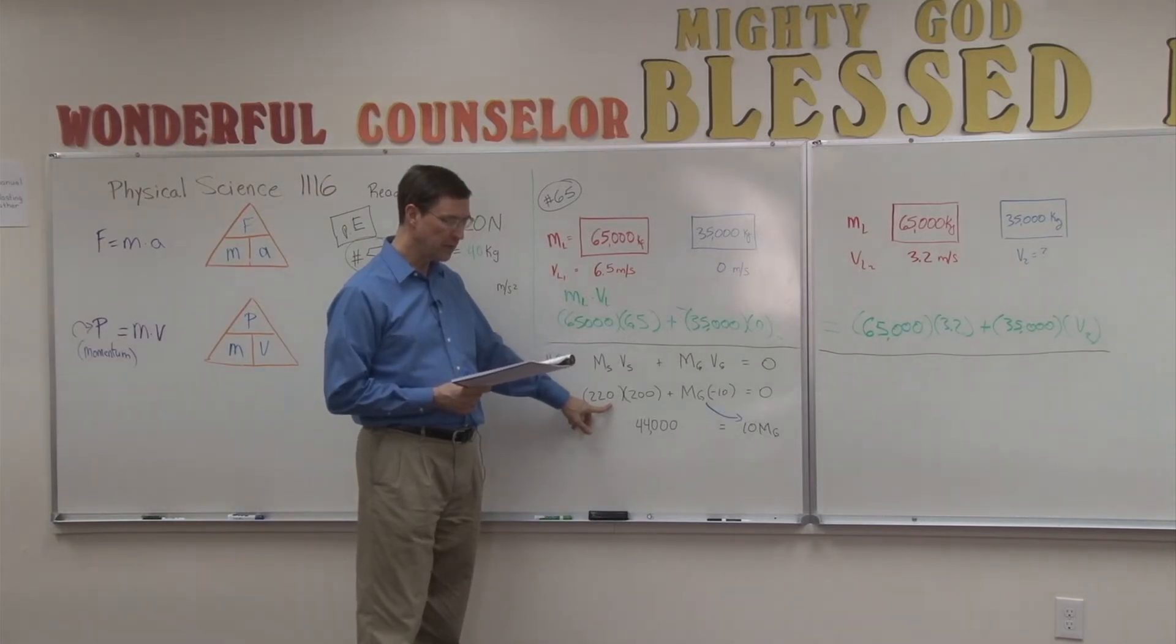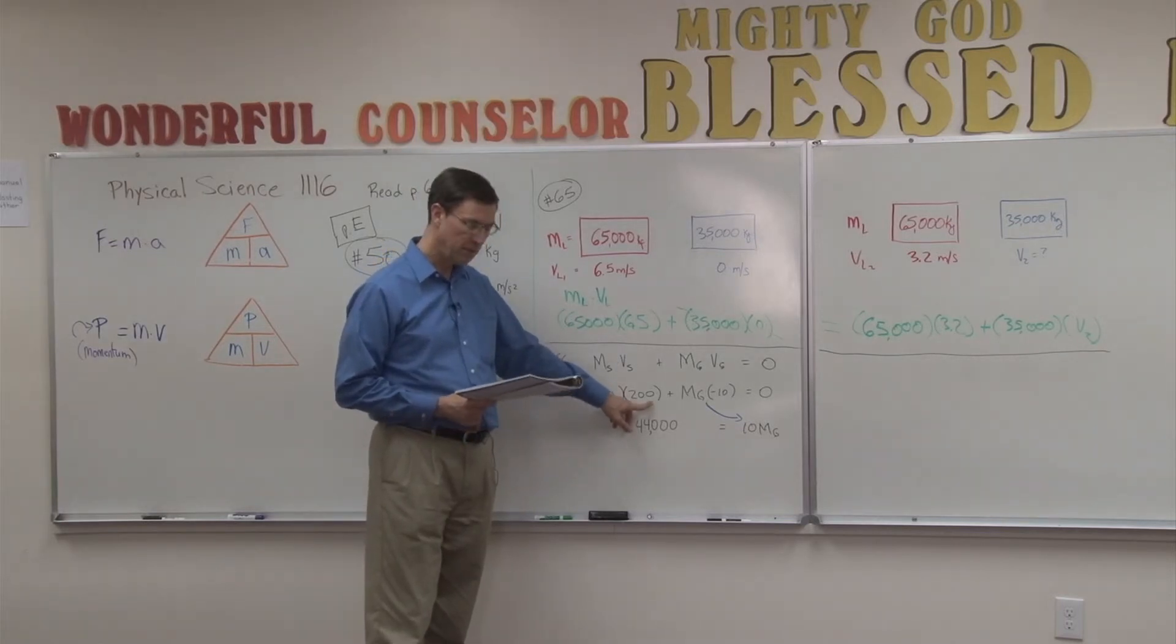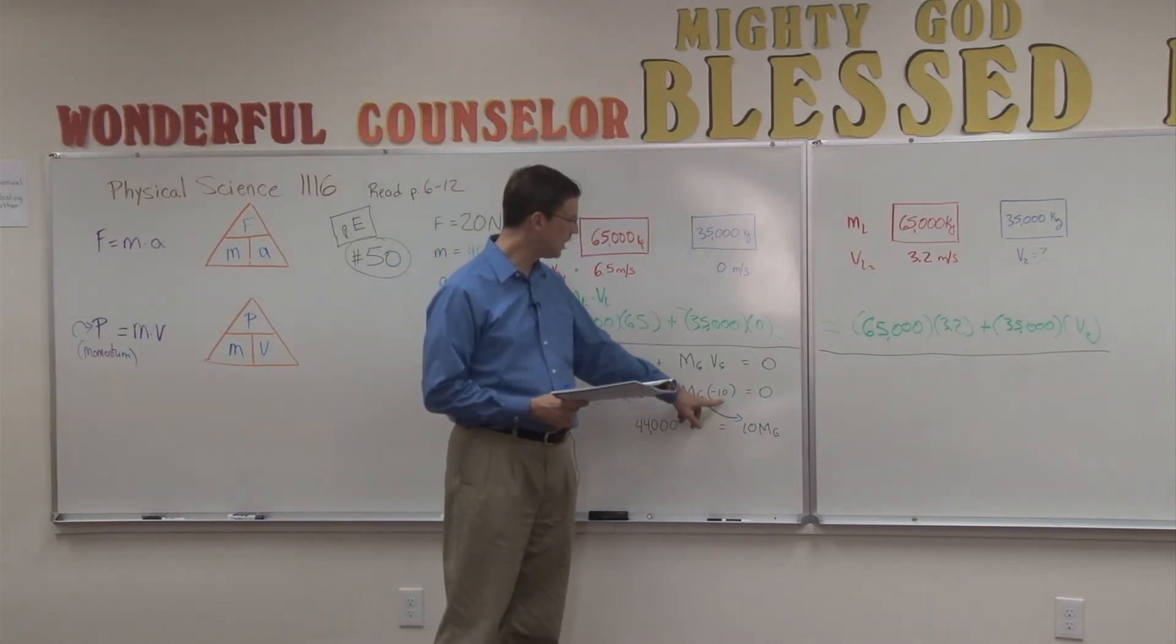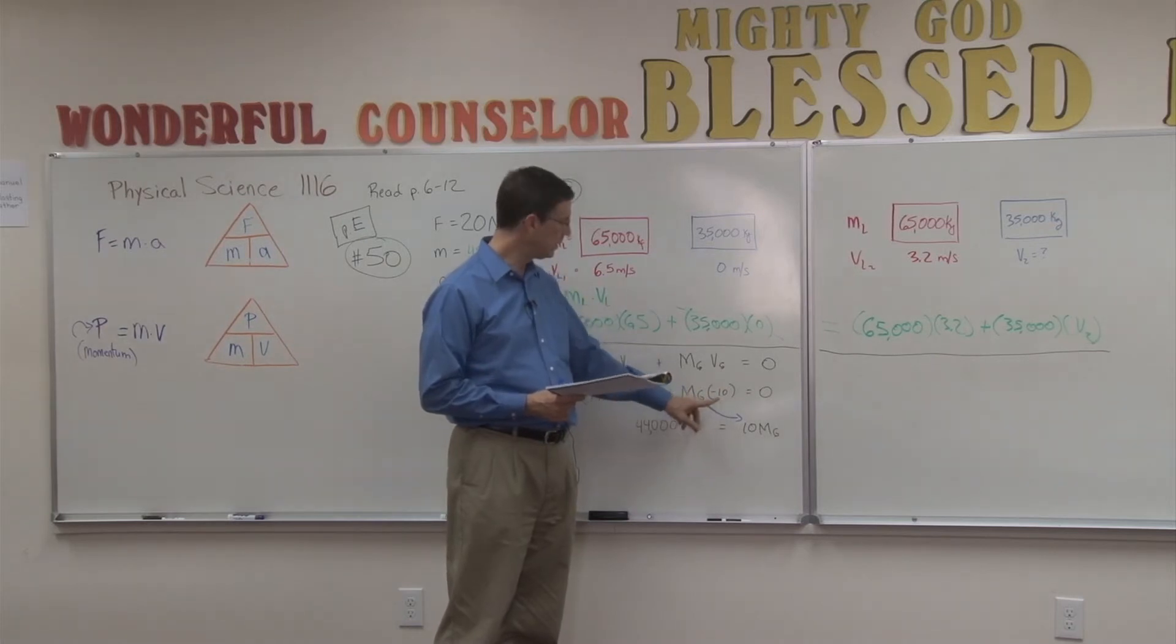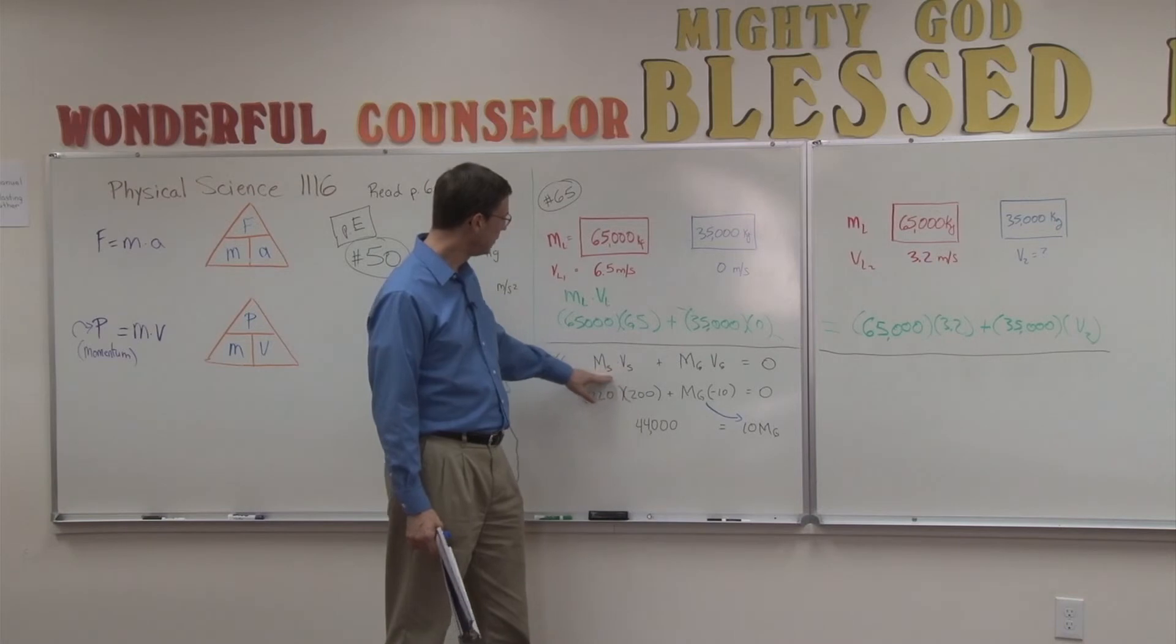It says a 220 kilogram artillery shell, leaves a naval gun at a velocity of 200 meters per second. If the recoil velocity of the gun is negative 10, what is its mass? Now, notice how I have this set up.